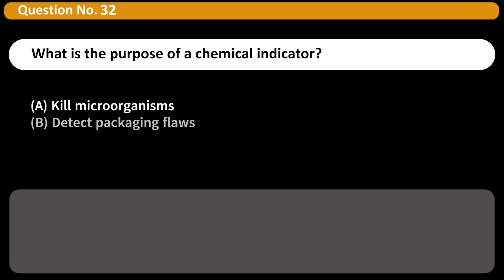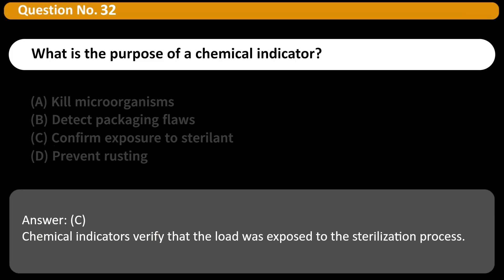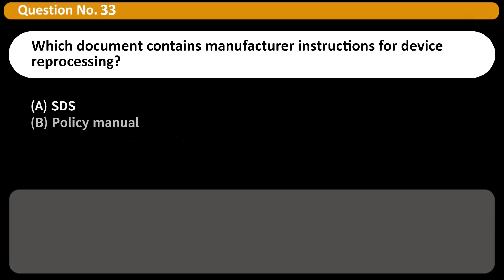What is the purpose of a chemical indicator? A. Kill microorganisms, B. Detect packaging flaws, C. Confirm exposure to sterilant, D. Prevent rusting. Answer C. Chemical indicators verify that the load was exposed to the sterilization process.